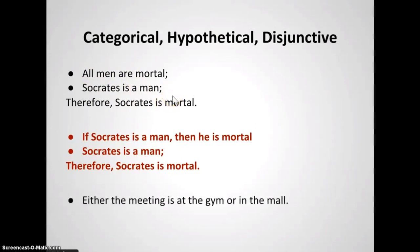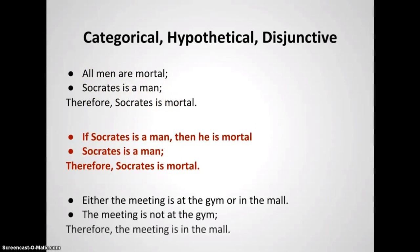The third kind of syllogism is a disjunctive syllogism, which has a premise one, premise two, and a conclusion. At the heart of a disjunctive syllogism is a disjunctive proposition. The important thing to remember is that syllogisms are effective at diagnosing errors in our thinking, because they tell us that if both premises are true, then the conclusion must be true.